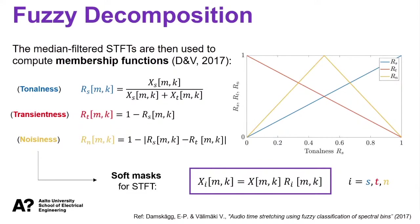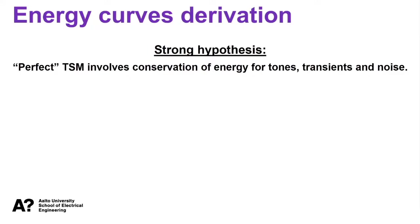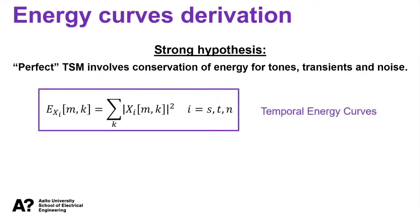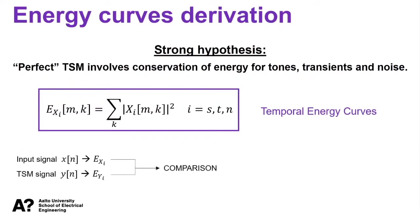Membership functions are used as soft masks for the STFT to individually evaluate the behavior of the three spectral components xi, where i is either the tonal, transient, or noise part. Under the hypothesis that perfect time-stretching involves conservation of energy for tones, transients, and noise, we investigate the energy curves of the spectral components of an audio sample scaled with multiple techniques, comparing them against the energy curves of the original non-scaled input. The tonal curve should resemble a slowly varying event, while the transient curve should present quick energy bursts interspersed by gaps of low energy. These curves provide deeper understanding of energy distribution before and after time-stretch.